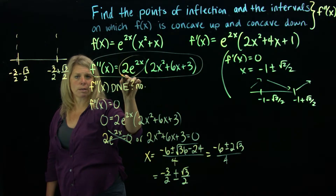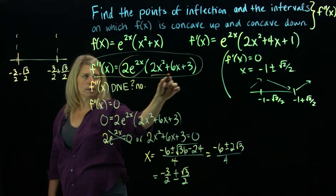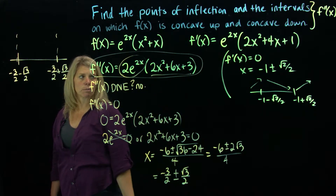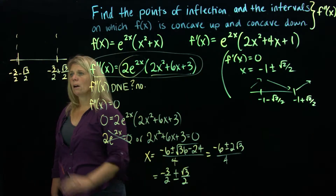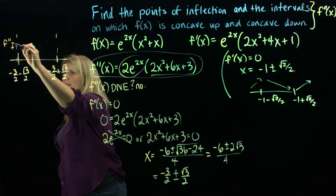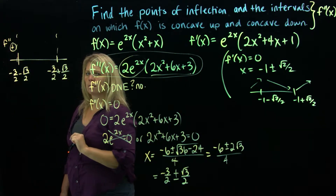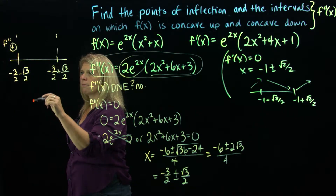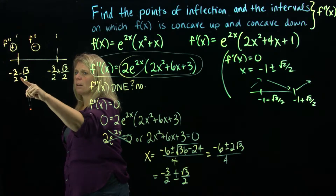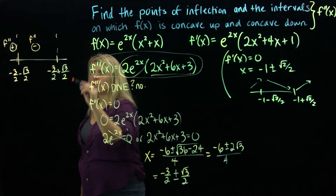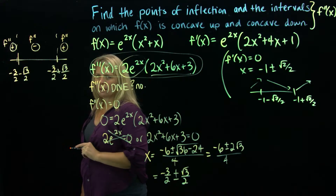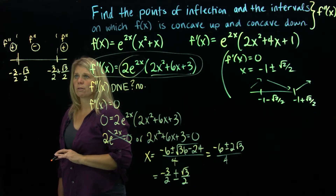The expression 2e to the 2x in front is always positive, so the only thing that changes signs is the quadratic 2x squared plus 6x plus 3. When I plug in test values, the second derivative is positive to the left of negative 3 halves minus square root of 3 over 2, negative between the two values, and positive to the right of negative 3 halves plus square root of 3 over 2.